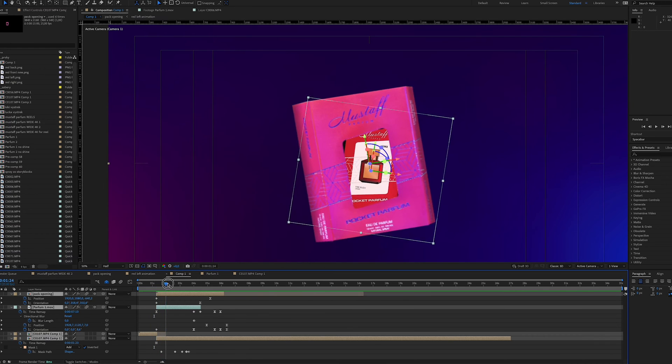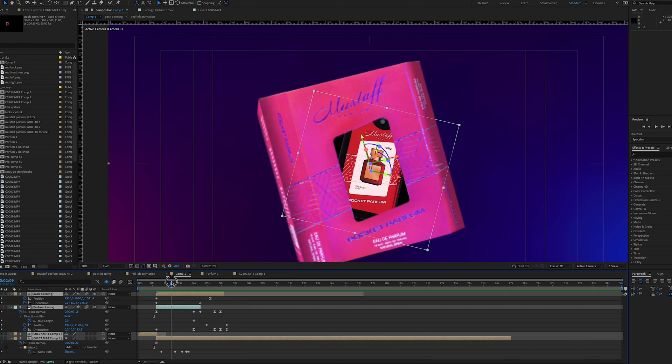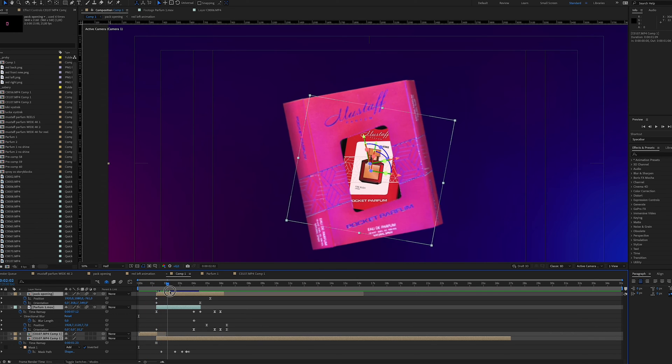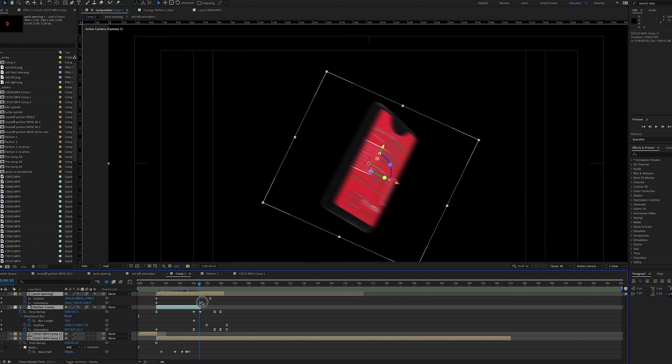Then I position the perfume and the packaging to the exact same position where the perfume is in the first clip. Then I play with the position, rotation and with the timing of both clips.